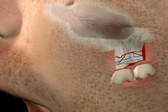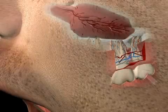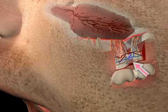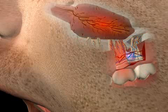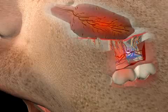By not aggressive, we mean that the surrounding structures, such as for example blood vessels or nerves, can be blocked but not damaged.